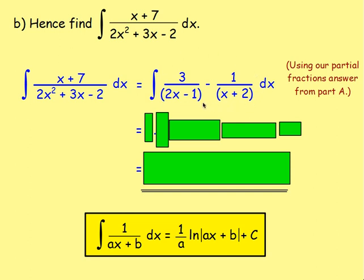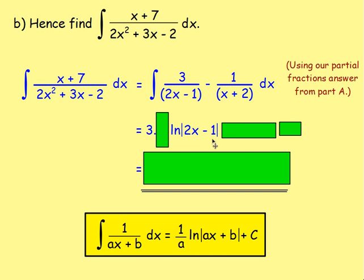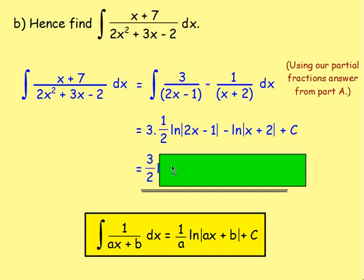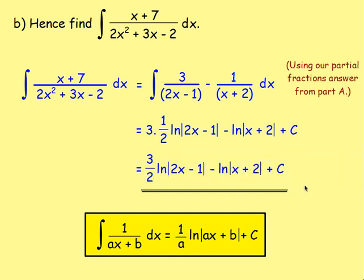To integrate this: the 3 stays as 3. Integrating 1/(2x − 1) gives ln|2x − 1|, but we need to divide by the derivative of the bracket — differentiating 2x − 1 gives 2, so we divide by 2. Then we take away: integrating 1/(x + 2) gives ln|x + 2|. Don't forget modulus signs. Simplifying, 3 times a half gives 3/2. So the answer is (3/2)ln|2x − 1| − ln|x + 2| + c.